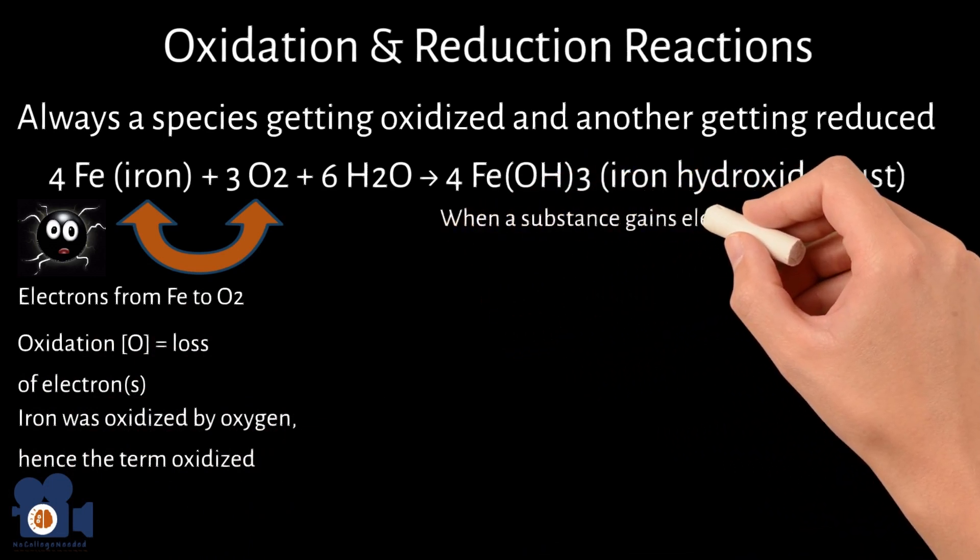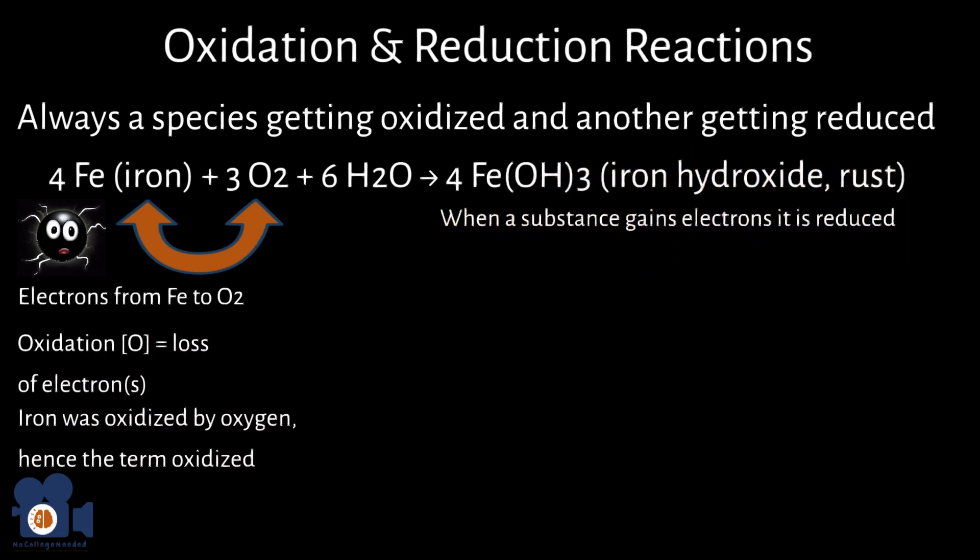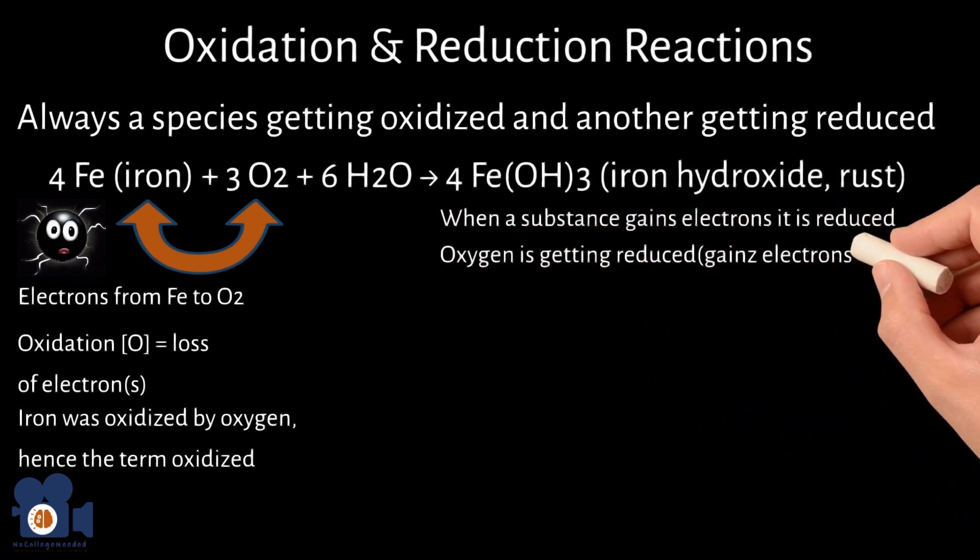When a substance gains electrons, it is reduced. With rusting, the oxygen is getting reduced, gains electrons from iron.